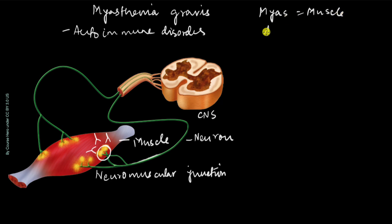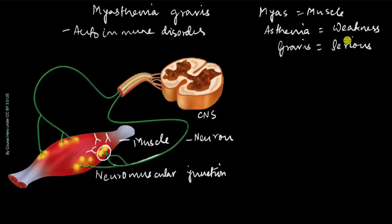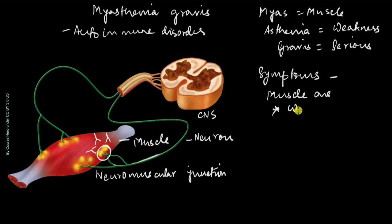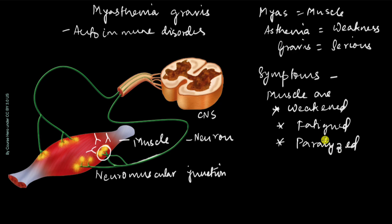Let's break down this name: 'myas' means muscle, 'asthenia' means weakness — which is what we see in this disease — and 'gravis' means serious. So it is a serious muscle disease, is what the name tells us. But we'll see later how it's not as serious as it sounds usually. The symptoms are weakened muscles, fatigue, and in some cases paralysis.